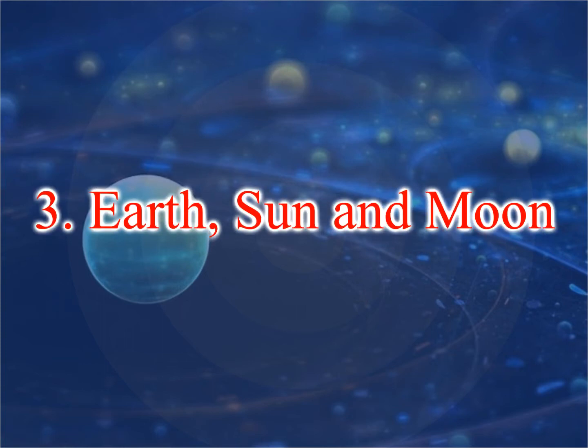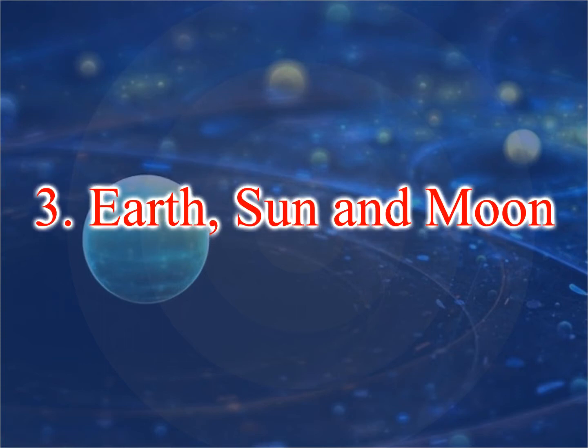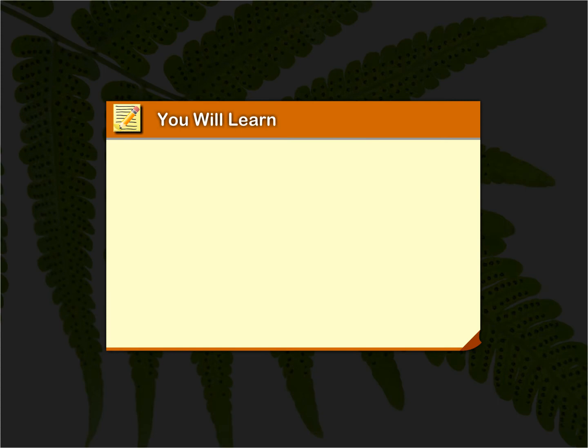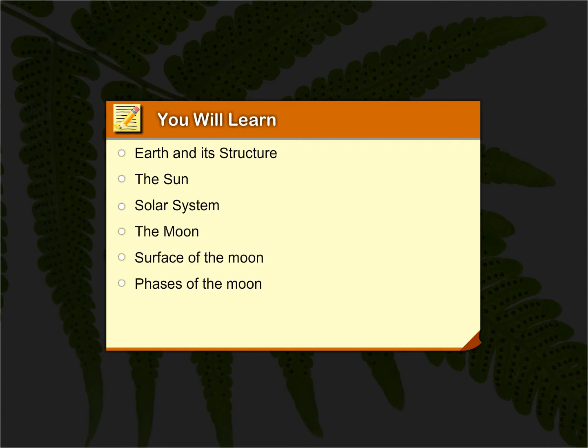Chapter 3: Earth, Sun and Moon. You will learn about Earth and its structure, the Sun, Solar System, the Moon, Surface of the Moon, Phases of the Moon, Landing on the Moon, and Eclipses.